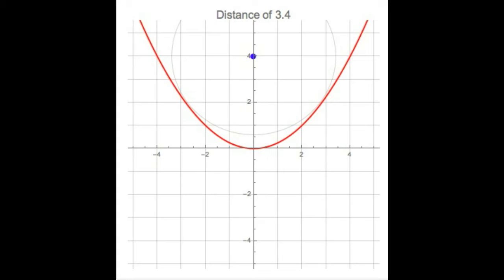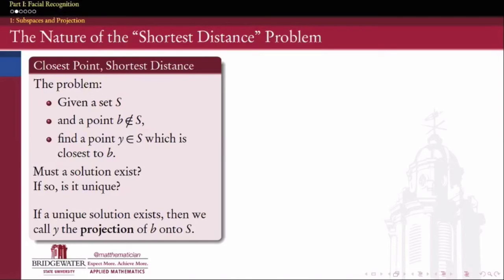There must be something special about this parabola that causes this non-uniqueness to happen. Or maybe a better way to say it is: maybe there was something special about the line that we looked at previously, which can guarantee for us that if there is a closest point, that closest point is unique. Let's hold on to that observation as well for later. Since we can't talk about a projection onto this parabola — the projection would be a non-unique object — we want to restrict our attention, as much as possible, just to examples where we have a linear subspace to work with, like the straight line from our original problem.